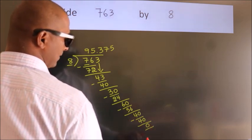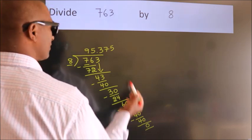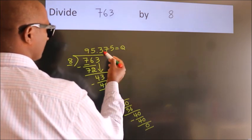Here, we got remainder 0. So, this is our quotient.